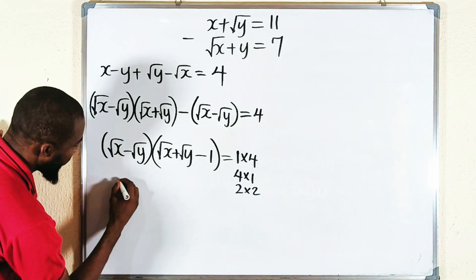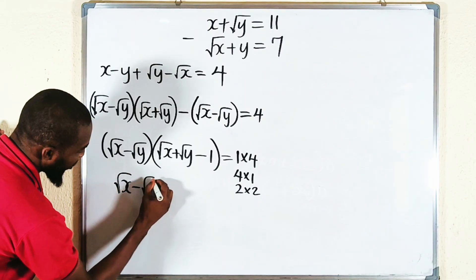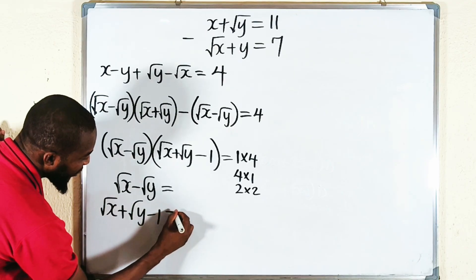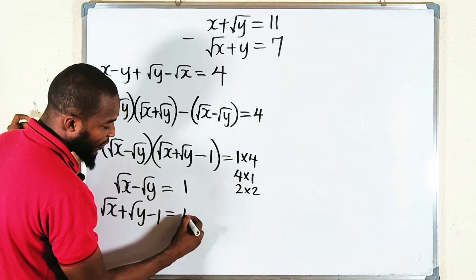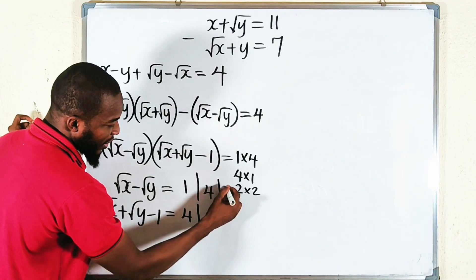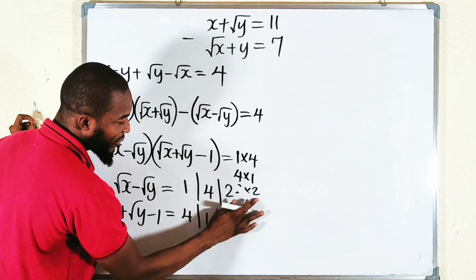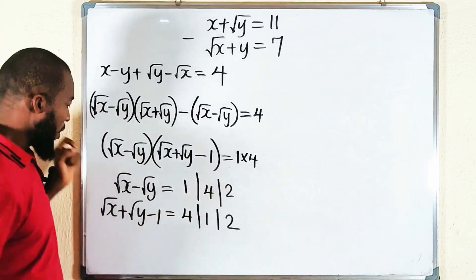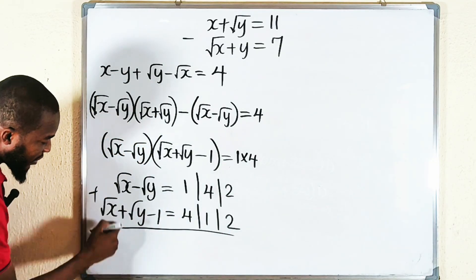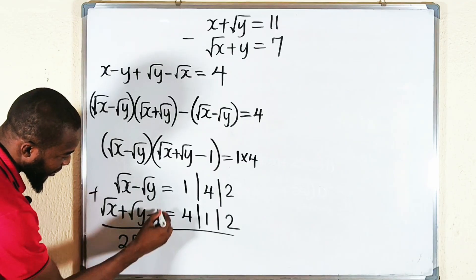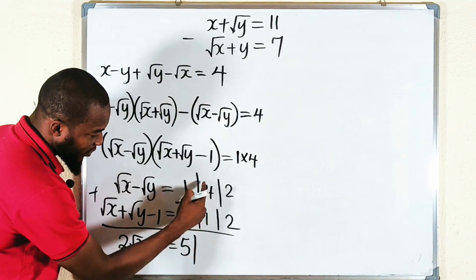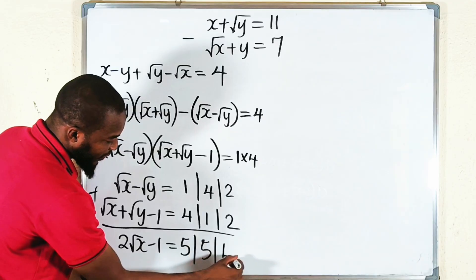Let me write the system: square root of x minus square root of y, and square root of x plus square root of y minus 1, equal the factor combinations. I want to solve them simultaneously by adding. Adding cancels the square root of y terms, leaving 2 times square root of x on the left. Adding the right sides: the first two combinations give 1 + 4 − 1 = 4, or 4 + 1 − 1 = 4, so 2√x = 5 plus the −1 offset, and the third combination gives 2 + 2 − 1 = 3, so 2√x = 4.